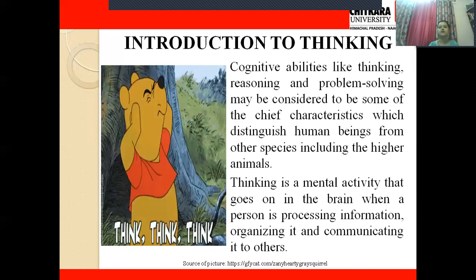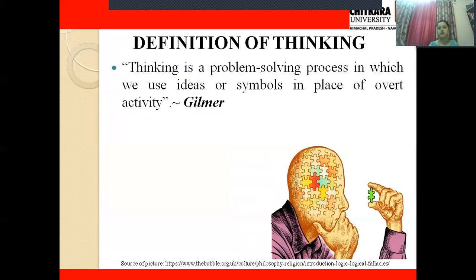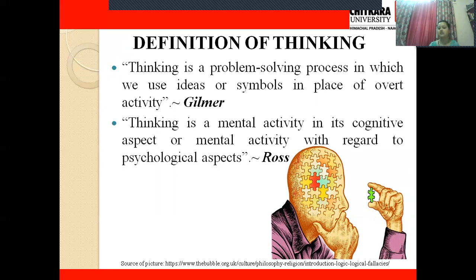Now let's see the definition of thinking. The first definition is by Gilmer, who says thinking is a problem-solving process in which we use ideas or symbols in place of overt activity — something we do openly. Thinking is something we do inside our mind, working on problems to find solutions. The next definition is by Ross, who says thinking is a mental activity in its cognitive aspect — we are doing something inside our brain using cognitive or psychological abilities to try to find solutions to our problems.